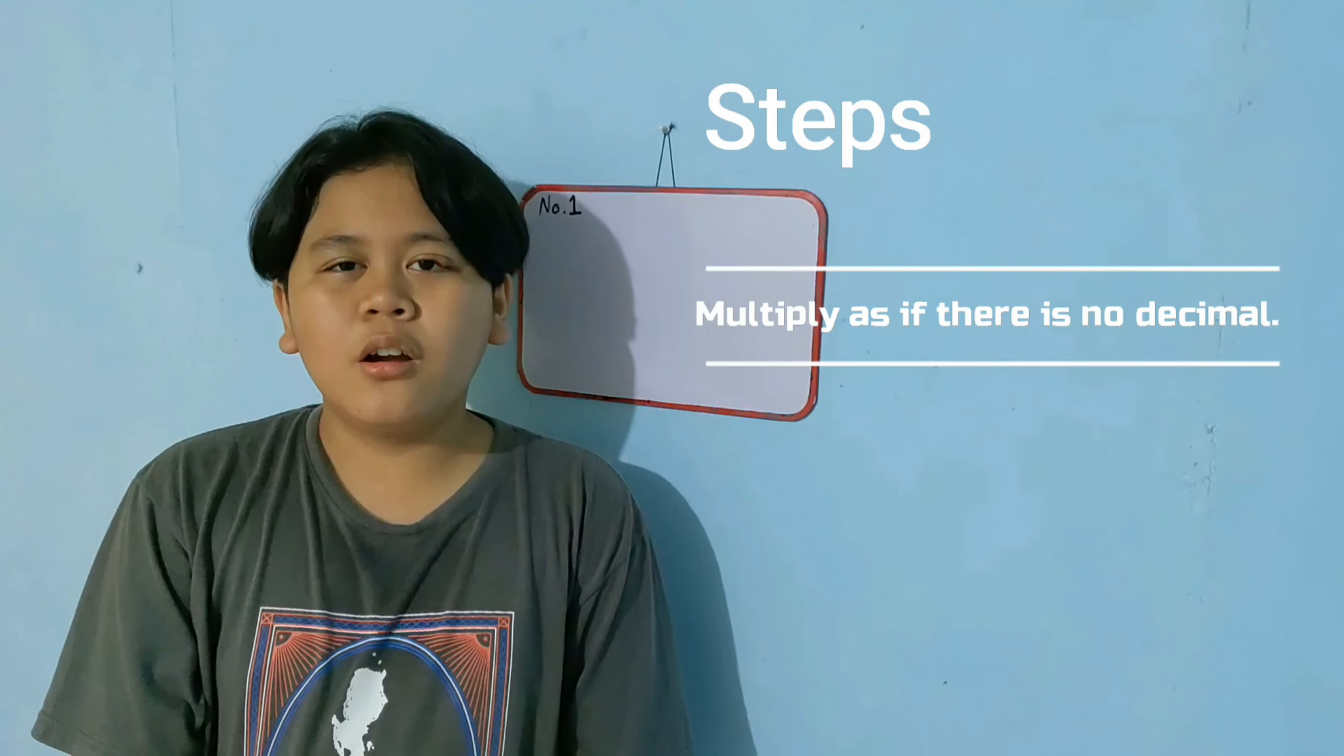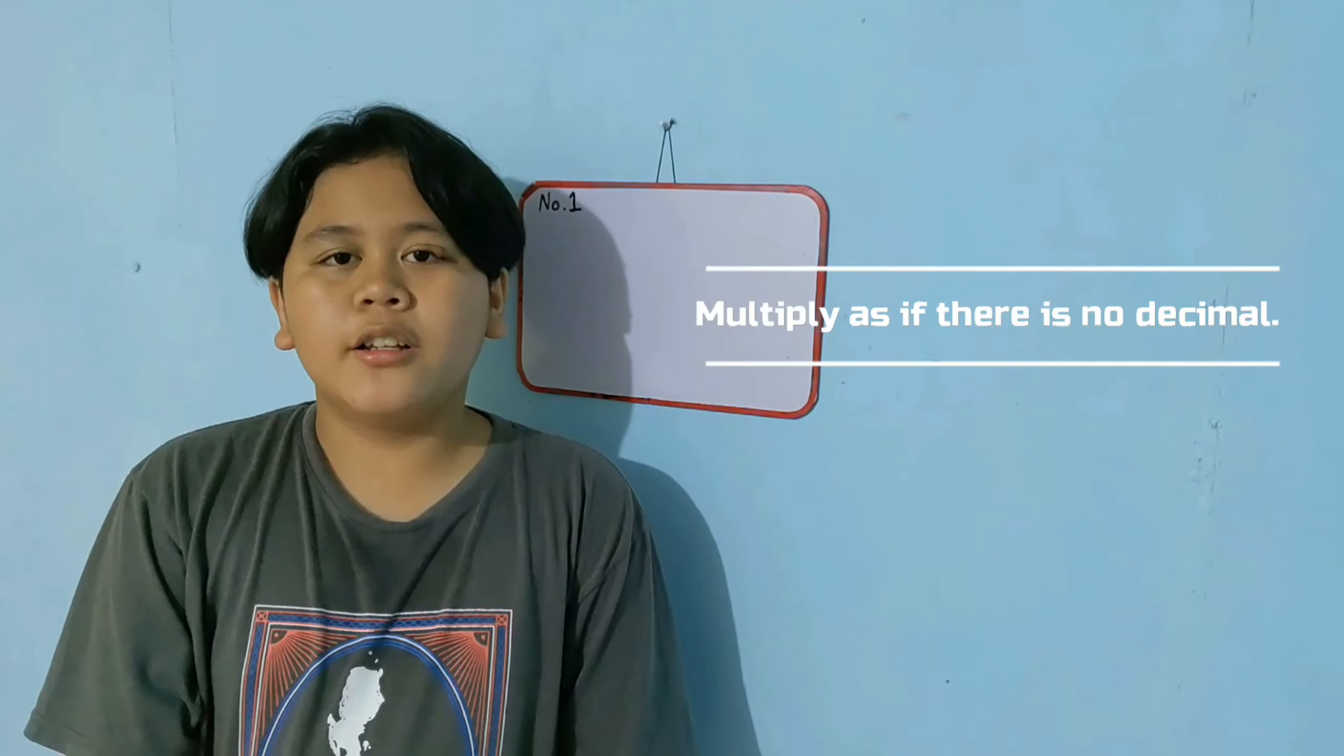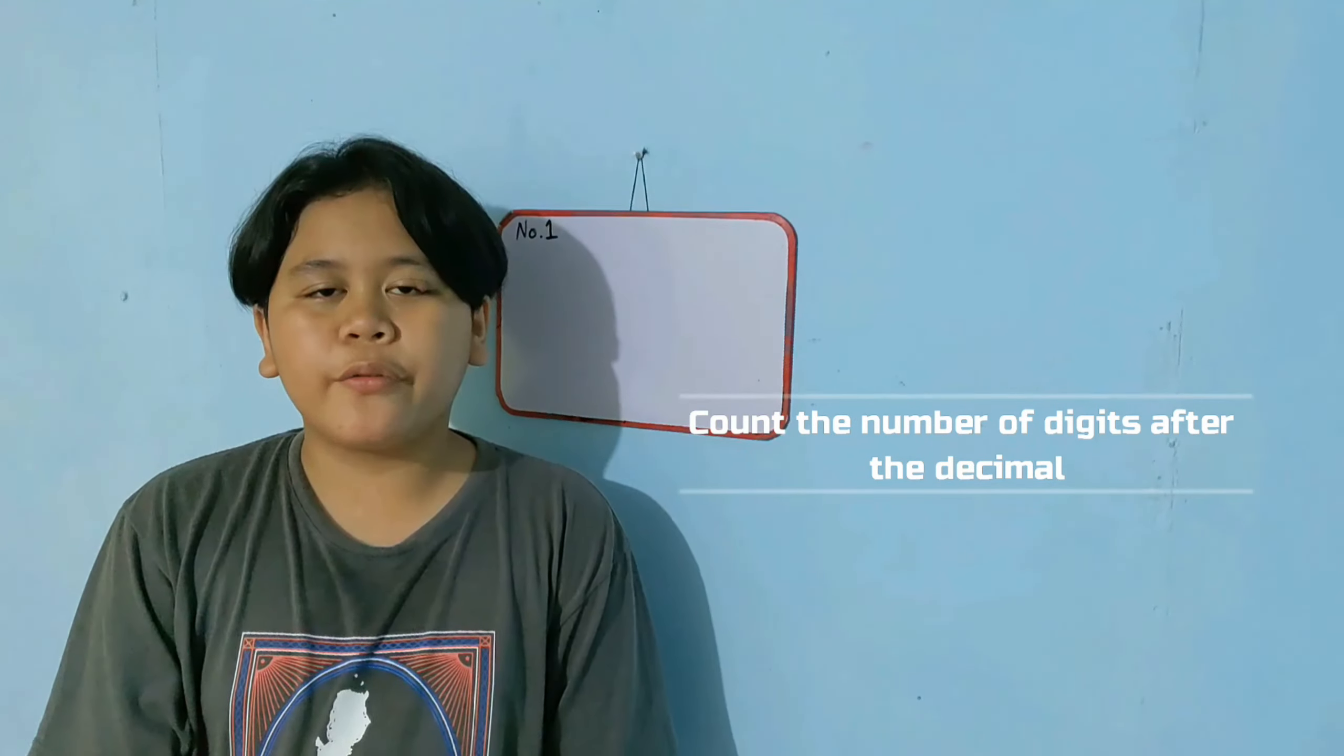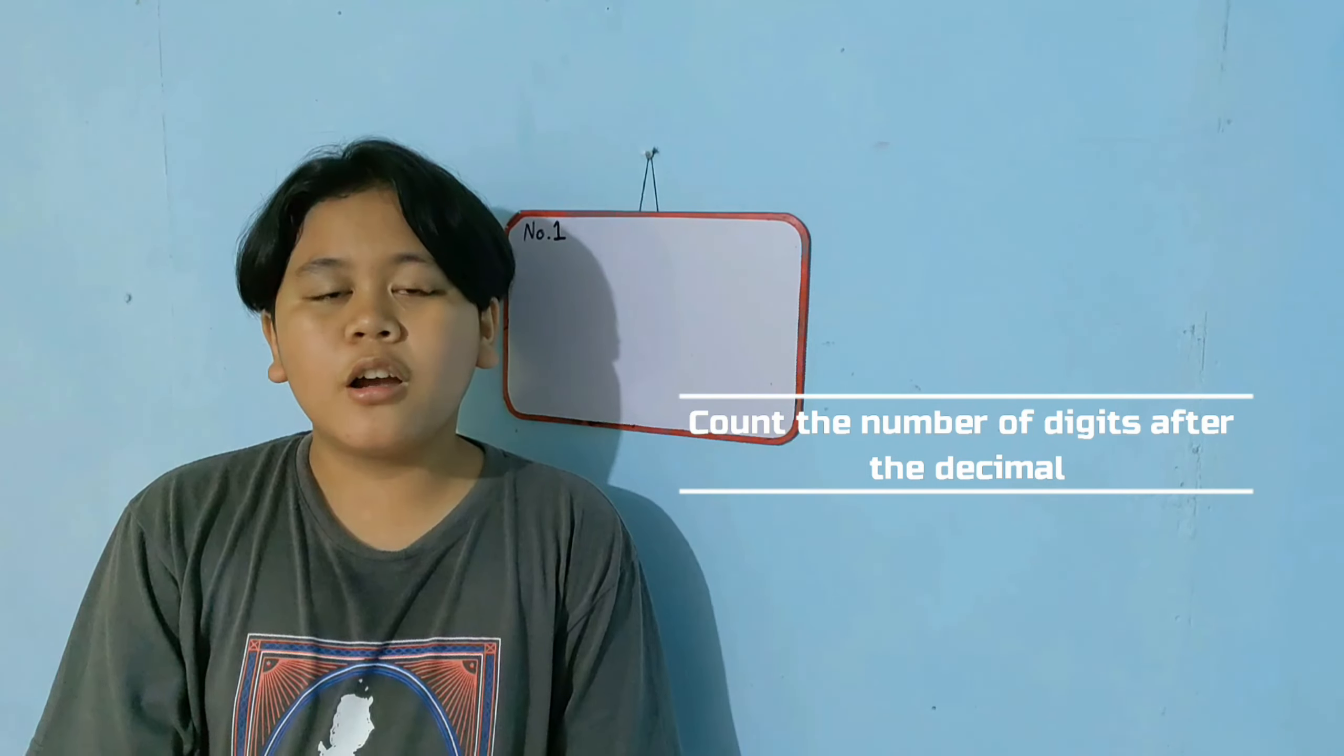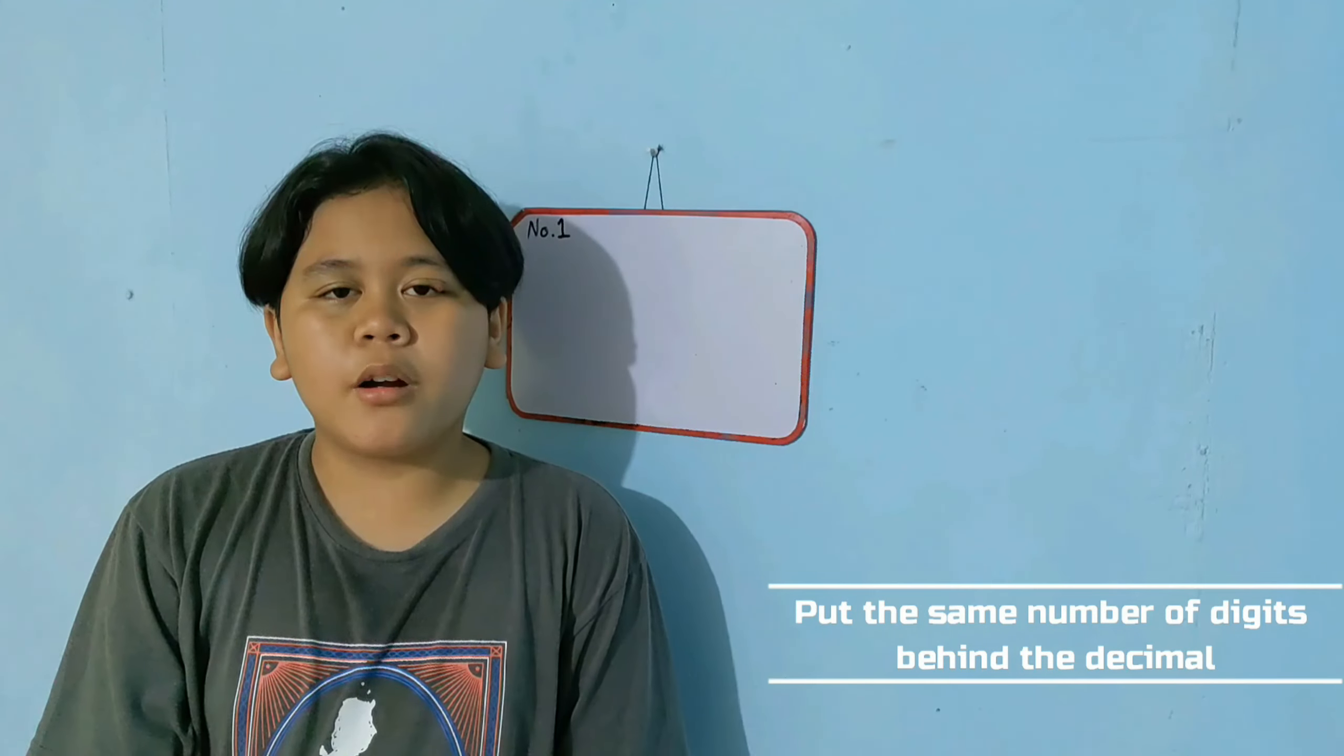To multiply a decimal, first multiply as if there is no decimal. Next, count the number of digits after the decimal in each factor. Finally, put the same number of digits behind the decimal in the product.